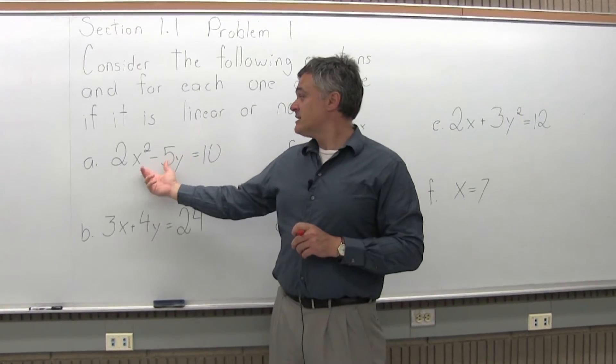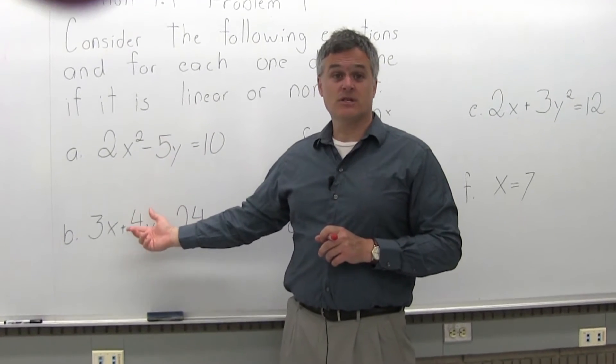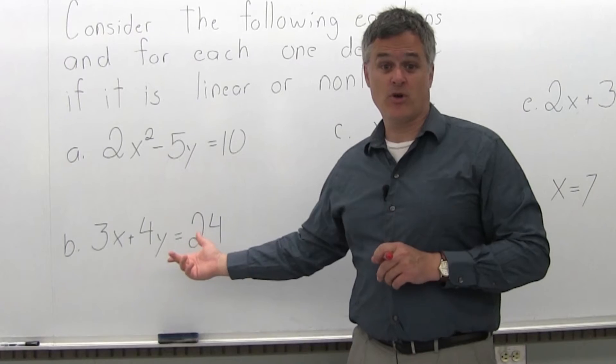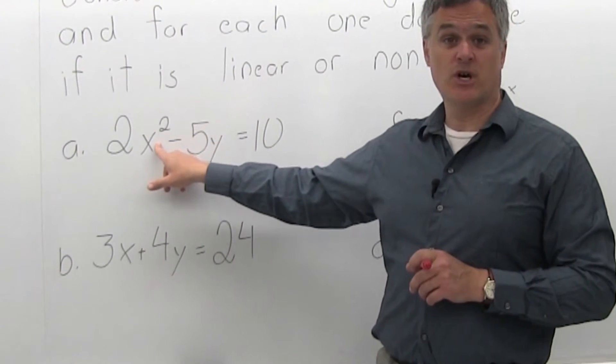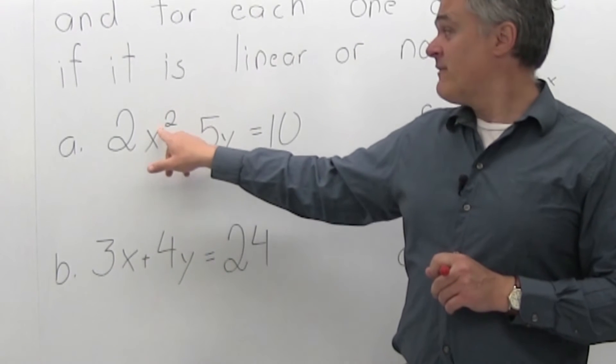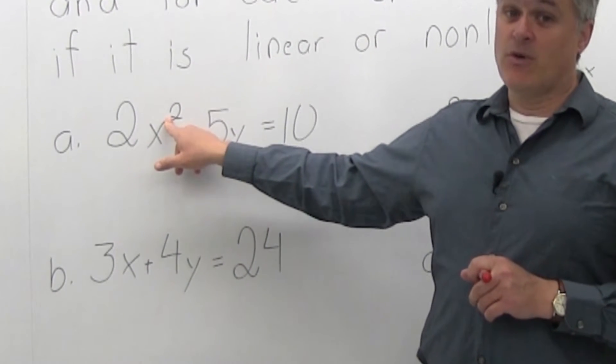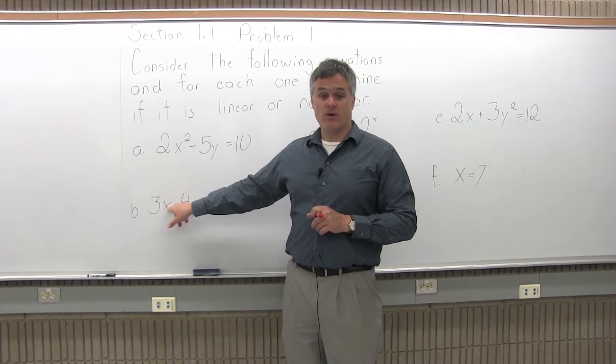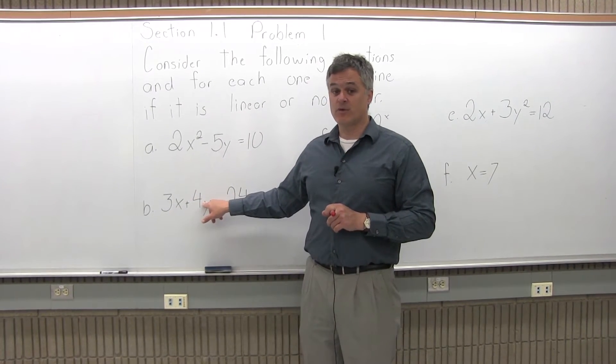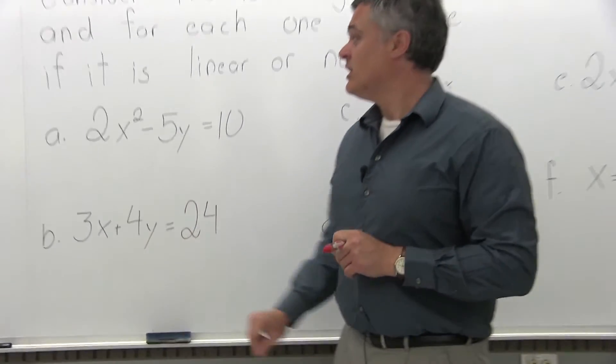What you want to see is, is the graph of each one of these a straight line or some type of a curve? To determine that, you want to see if you have exponents on the variables. If you have exponents like this, the graph is a curve, it would be non-linear. But when the exponents are only to the first power for the variables, then the graph would be a straight line, so it would be linear.